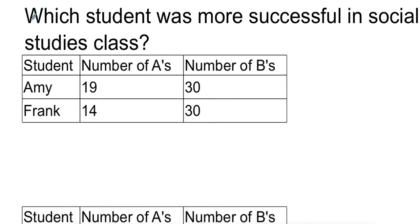Now in our first example, we're going to be comparing two sets of students and how they do in social studies. So first we have Amy and Frank and we're comparing the numbers of A's they get on assignments versus the number of B's. Now in this example, it's actually pretty easy to see which student is a bit more successful because they have the same number of B's, but in A's we can see that Amy tends to get a few more A's than Frank does.